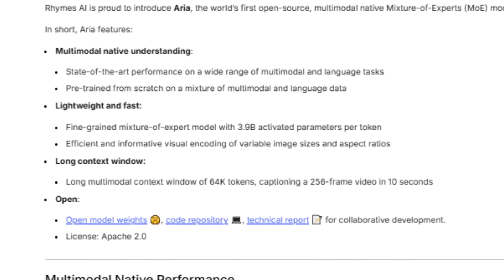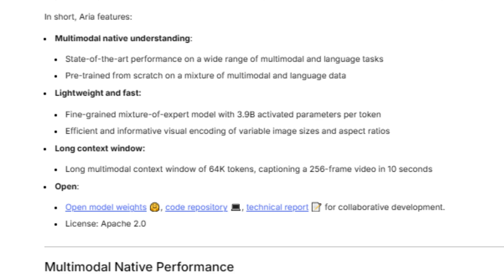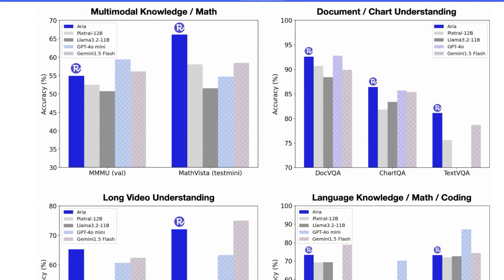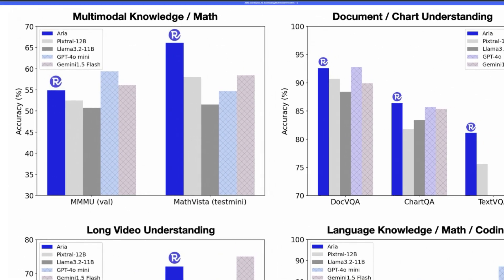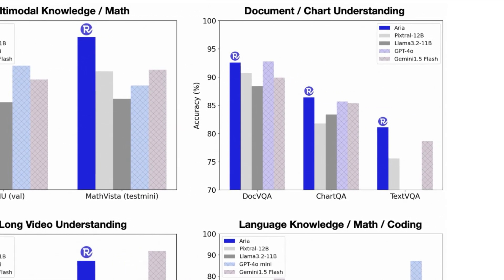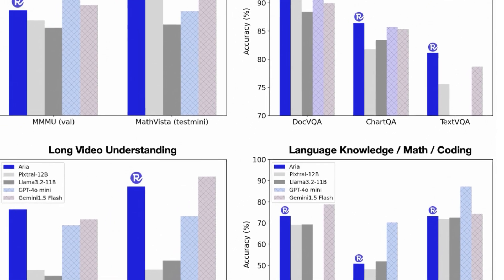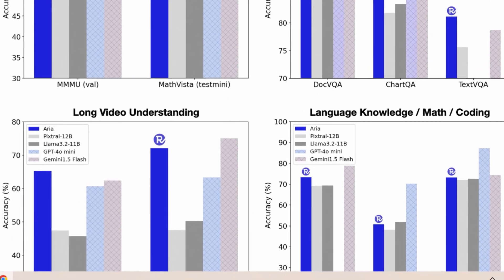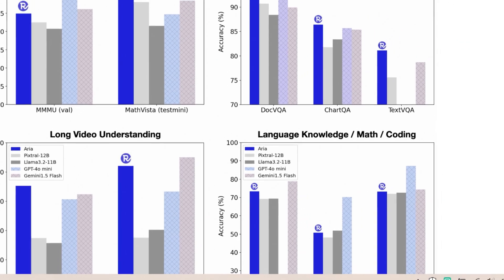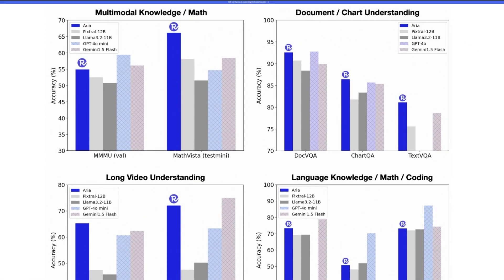MoE activates only a subset of experts for each token, leading to faster and more efficient computations. With 66 fine-tuned experts, Aria adapts to new and different inputs whether it's language, images, or complex coding tasks. Across various benchmark tasks from knowledge and math to long video understanding, Aria consistently outshines its competition. It would be more interesting to go through a few examples, and Aria has released a GitHub repo where you can look at those examples.